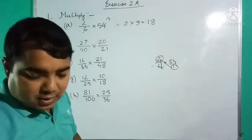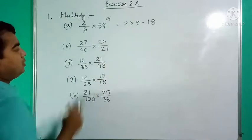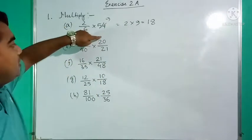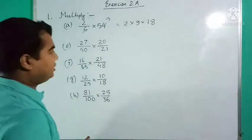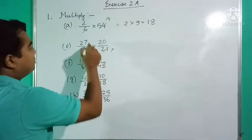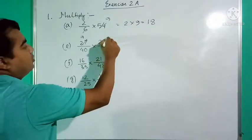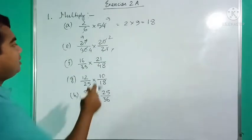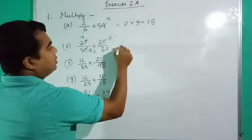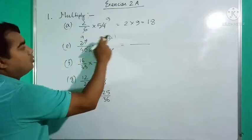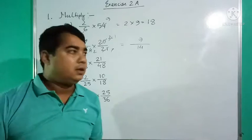Next, question number 1e: 27/40 × 20/21. The numerators are 27 and 20, denominators are 40 and 21. Cancel 27 and 21 — both divisible by 3, giving 9 and 7. Then cancel 40 and 20 — both divisible by 10, giving 4 and 2. Again 2 and 4 are divisible by 2, giving 1 and 2. Multiply numerator × numerator: 9 × 1 = 9; denominator × denominator: 2 × 7 = 14. Answer is 9/14.